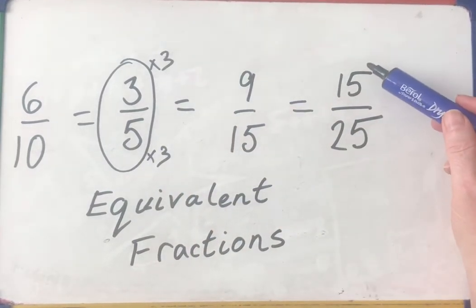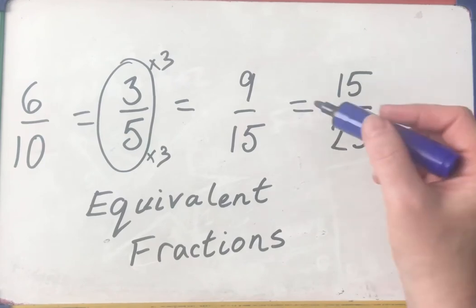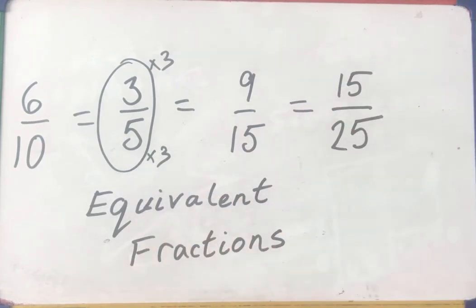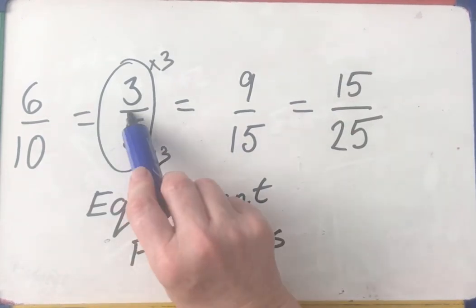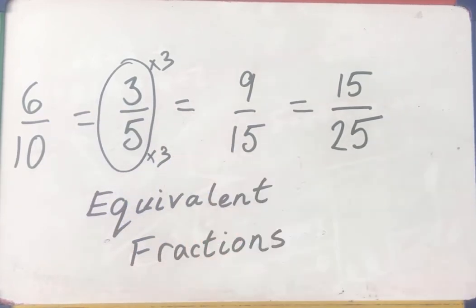What did I multiply 3/5 by to get 15/25? Well, 3 goes into 15 five times and 5 fives are 25. Double it, 3 twos are 6, 5 twos are 10. So equivalent fractions, actually, they are just about using times tables.